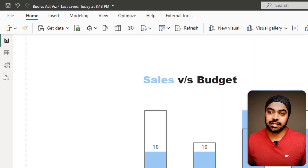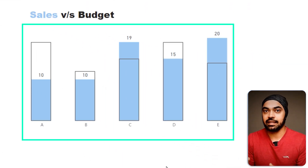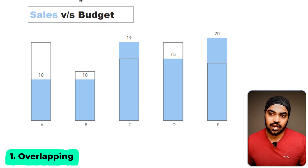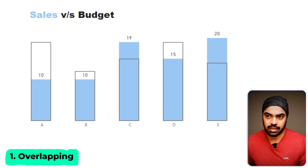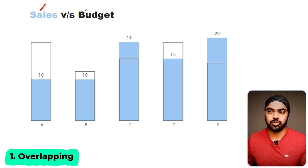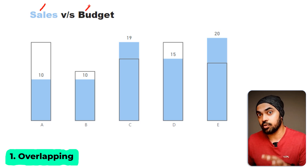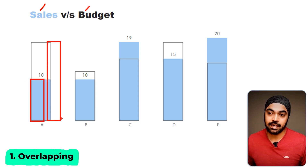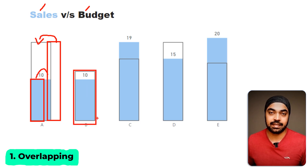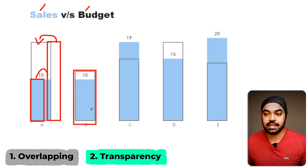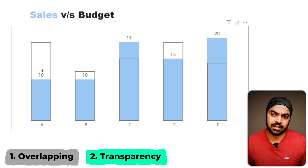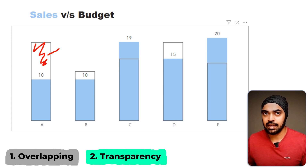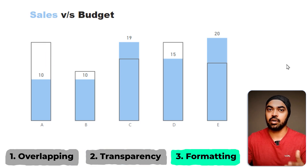To build a chart like this, we need three techniques. One is the overlapping technique — we have two measures in our chart, sales and budget, and both create two bars that will overlap one another to create a single bar. Part two is making a bar transparent, so you can literally see through it. Finally, a bit of formatting will land you a chart like this.